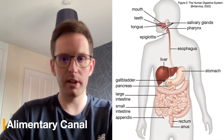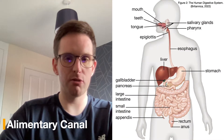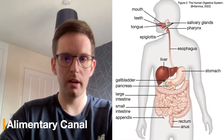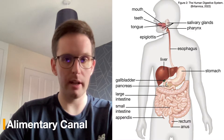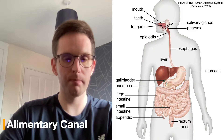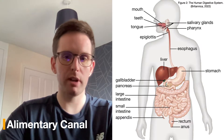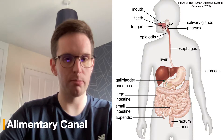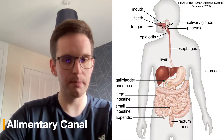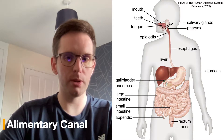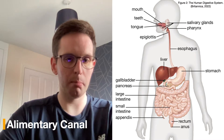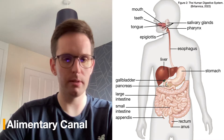The alimentary canal, or the gastrointestinal tract, is a structure made up of a hollow tube that connects the mouth to the anus. It has four layers of epithelial tissue surrounding the lumen. The alimentary canal consists of the mouth, pharynx, esophagus, stomach, small and large intestines, the rectum, and the anus. It also utilises accessory organs such as the liver, gallbladder, pancreas, and salivary glands.